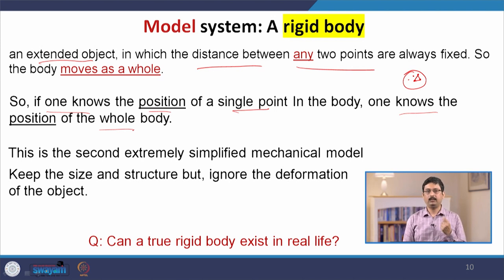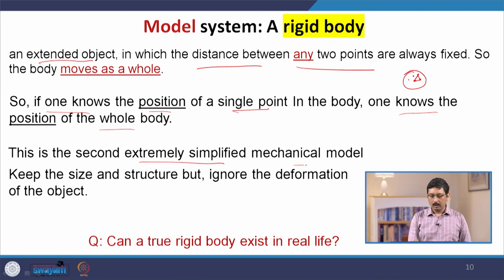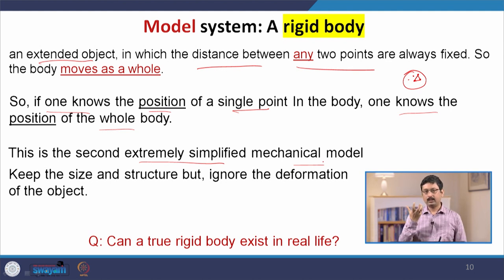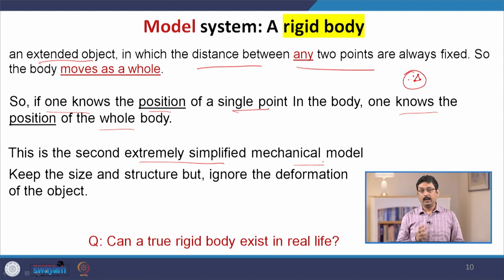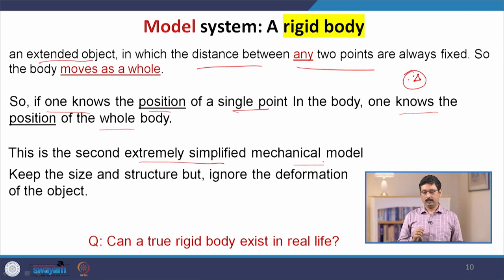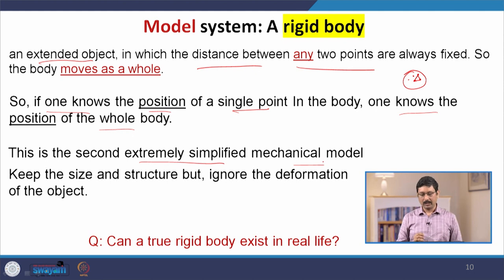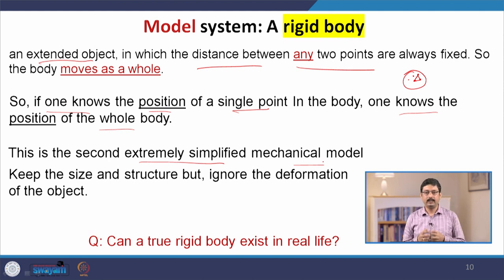We shall see in the later part of the course that one often takes a special point inside the body called the center of mass. This is the second extremely simplified mechanical model. Why extremely simplified? Because when we represent a solid object, we keep the information about size and structure, but we are not allowing any deformation of the object.